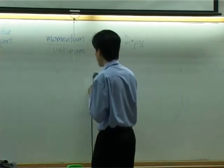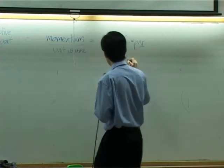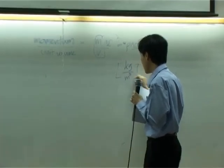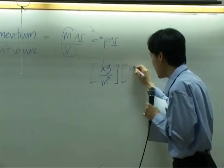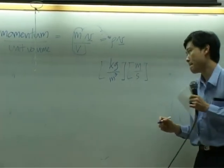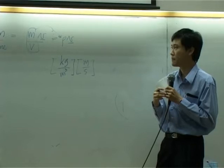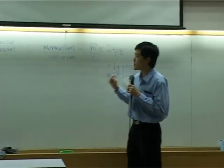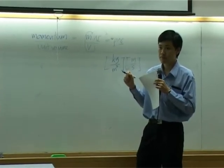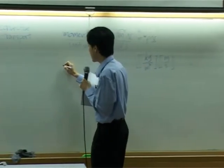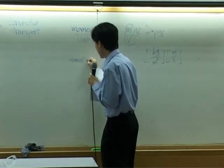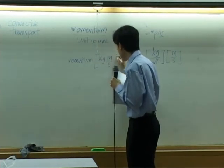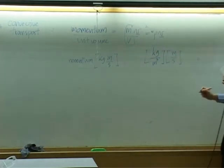Now, if you look into the unit, the unit of density is kilogram per cubic meter. Unit of velocity is meter per second. What about, what is unit of momentum? Momentum itself has a unit of kilogram meter per second. This is unit of momentum.